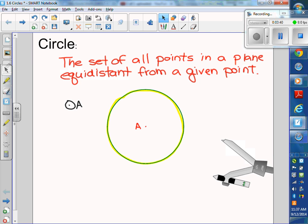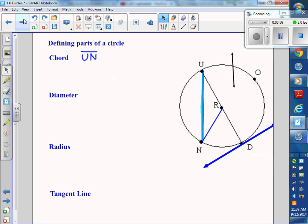Line segment UN. Okay, so that's a chord right here, right? So it's a line segment UN. So the symbolic notation is that. Oh, that reminds me. For a circle, the symbolic notation is a circle symbol with a capital letter. That's circle A. That's how you read that.